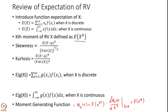We defined the kth raw moment of the random variable x and we also defined the moment generating function of x. Along with that, we defined two important measures: the coefficient of skewness and the coefficient of kurtosis.